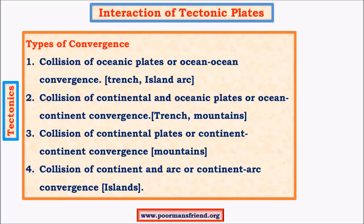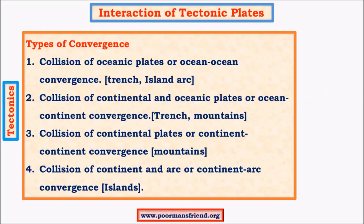In continent-continent convergence, there is again formation of a trench, but the trench becomes less significant because it gets submerged under the fold mountain system. The lighter block upthrusts above the denser one, giving rise to a fold mountain system. The continent-arc collision is a little more complex and will be seen with a picture later.